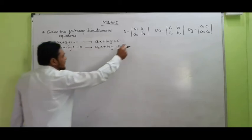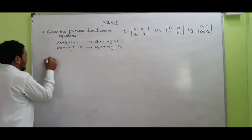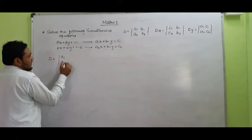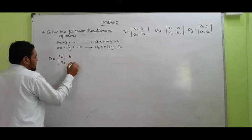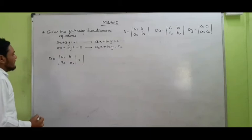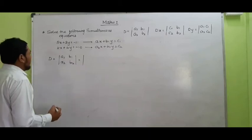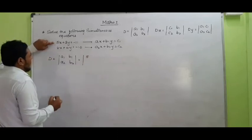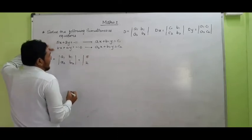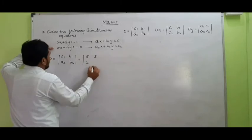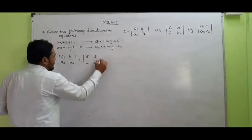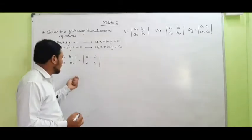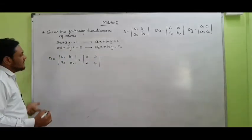So students, let us find the value of determinant D. We know that determinant D is equal to A1, A2, B1, B2. So we have to substitute the values: A1 is 5, A2 is 2, B1 is 3, and B2 is 4. As shown in the previous lecture, we know how to find the value of a determinant.